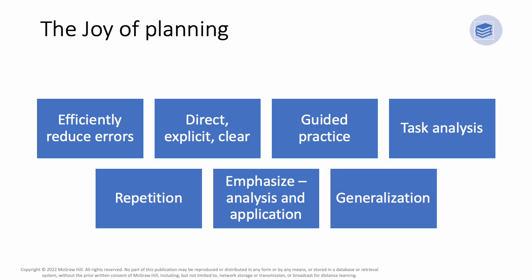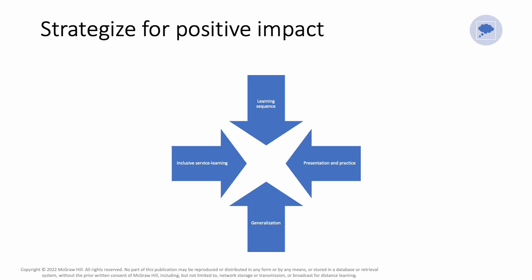Now, if we look at the joy of planning, we reduce the chances of making errors by the students. Thus, efficiently implemented technologies — direct, explicit, clear objectives with advanced organizers — use demonstrations to help think aloud, guided practice, think about the design of the task analysis to move from simple to complex for specific skills, plan for a lot of repetition and examples in the presentation, plan for opportunities for independent practice, emphasize the analysis and application of prompts, and incorporate generalization before, during, and after instructions.